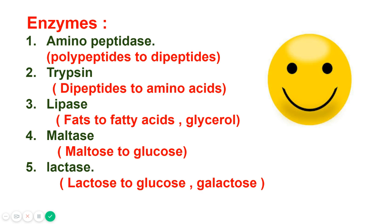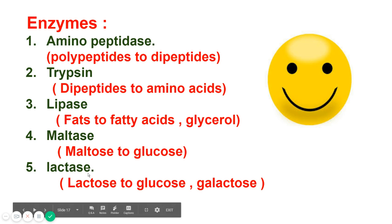Lipase converts fats to fatty acids and glycerol. Maltase converts maltose to glucose, which is the smallest unit of carbohydrates. Lactase converts lactose to glucose and galactose.